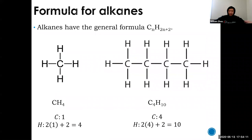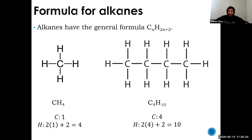The molecular formula for alkanes is CnH(2n+2), where n is the number of carbons. For methane: n=1, so H = 2(1)+2 = 4, giving CH4. For butane: n=4, so H = 2(4)+2 = 10, giving C4H10. You can predict the number of hydrogens for any saturated hydrocarbon — for example, 100 carbons would give 202 hydrogens.